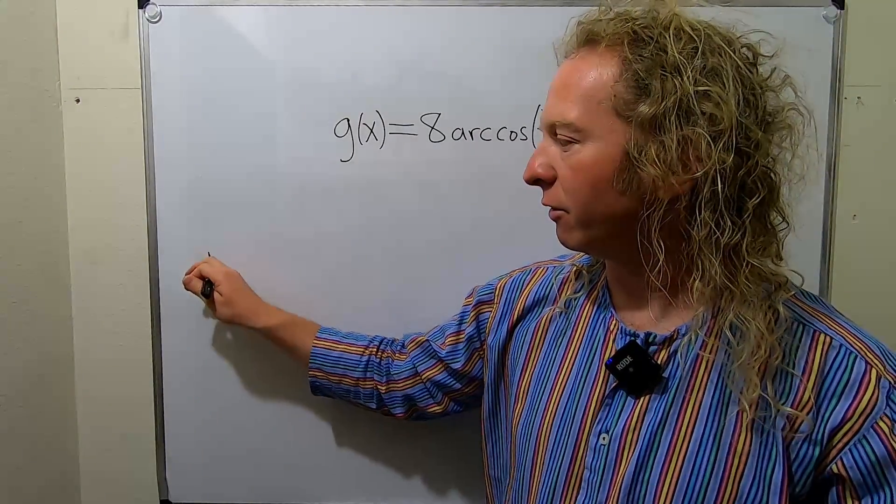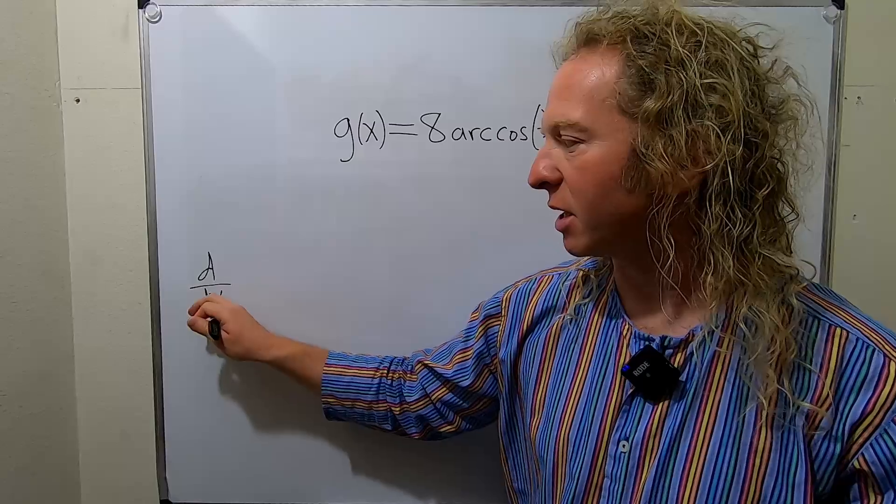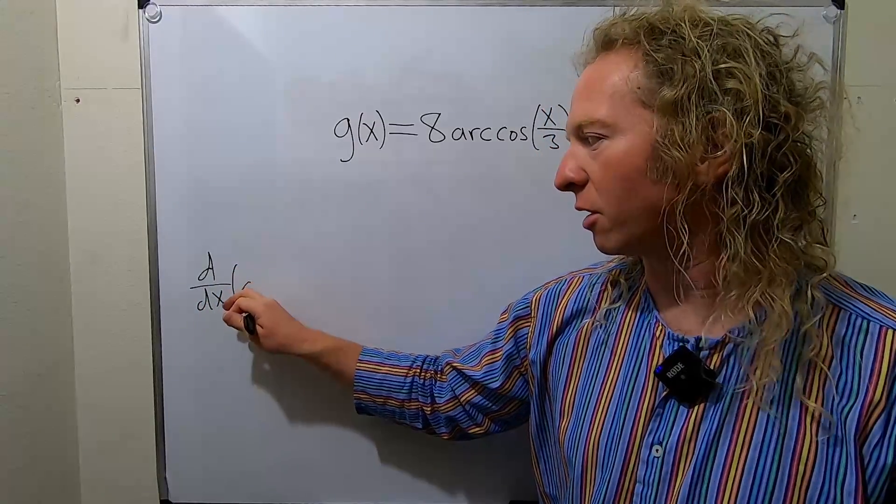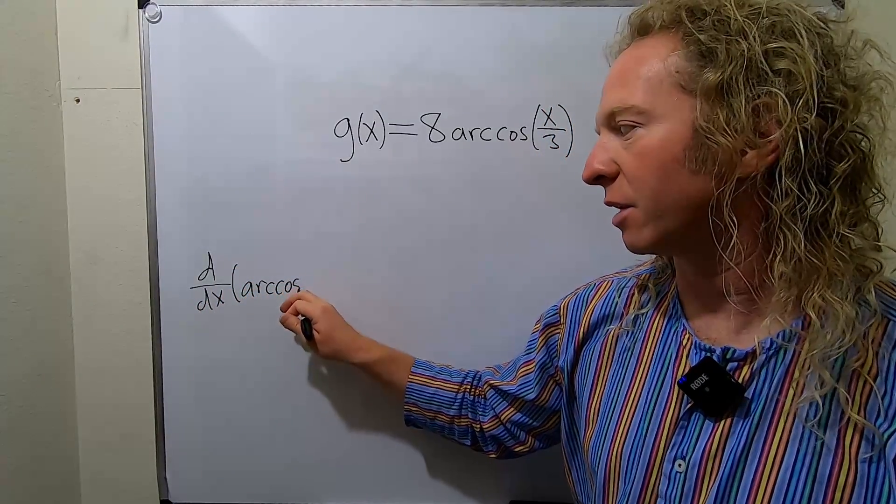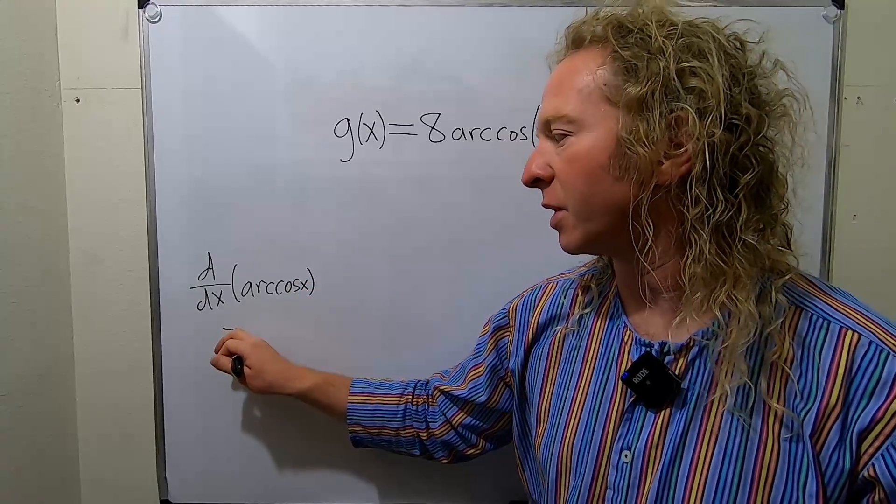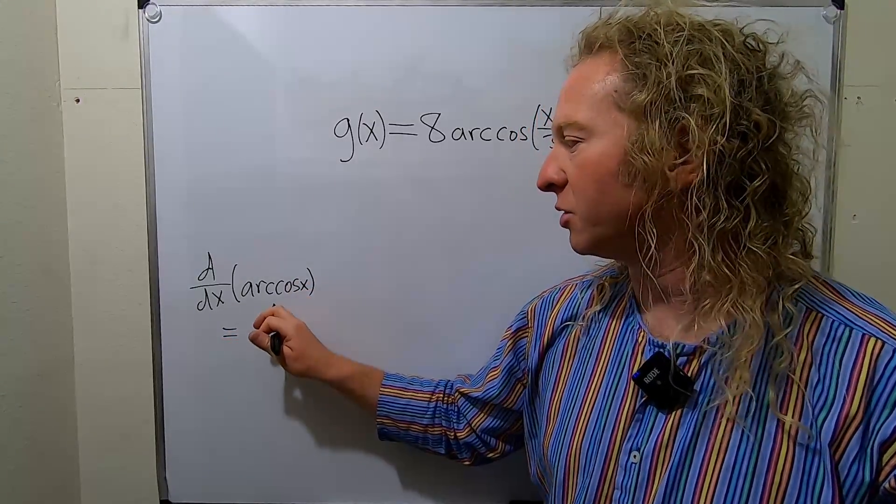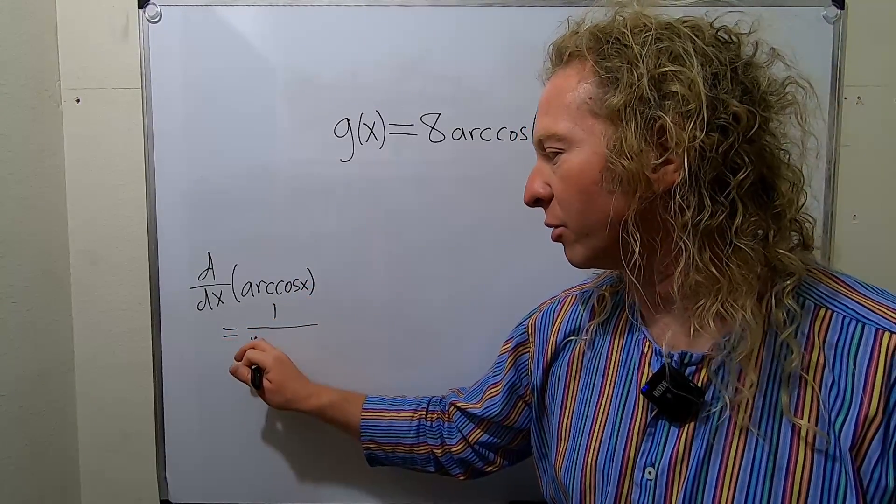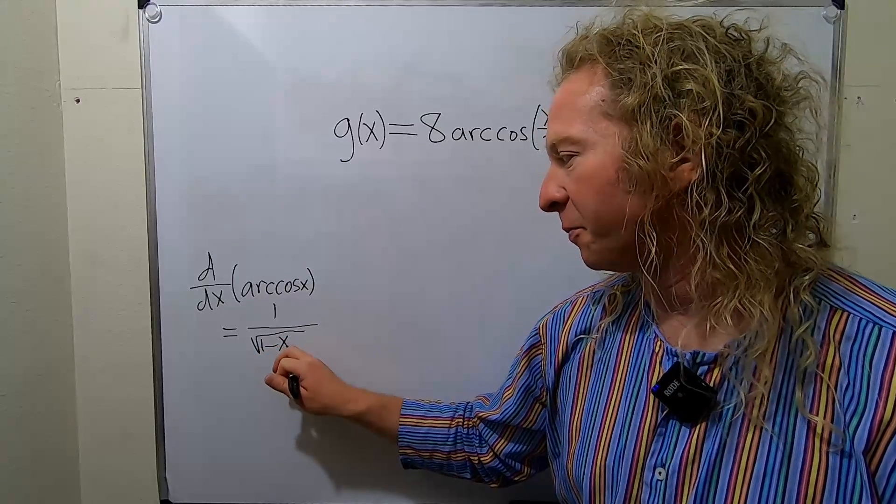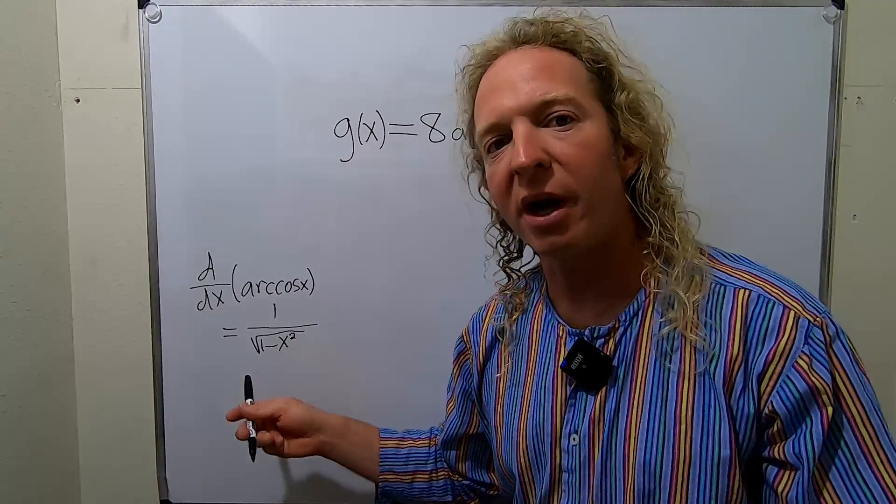So recall, if you have the derivative with respect to x of the arc cosine of x, this is equal to... So if it's arc sine, it's just 1 over the square root of 1 minus x squared. So this would be the derivative of arc sine.